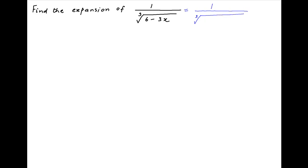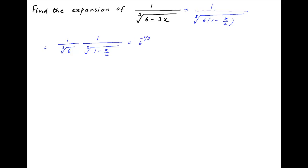The given expression can be written as 1 upon cube root of 6, times in brackets 1 minus 6 upon 2. Cube root of 6 can be taken out, and therefore this expression becomes 1 upon cube root of 6 times 1 upon cube root of (1 minus 6 upon 2), which can also be written as 6 raised to the power minus 1 upon 3, times in brackets (1 minus 6 upon 2) raised to the power minus 1 upon 3.